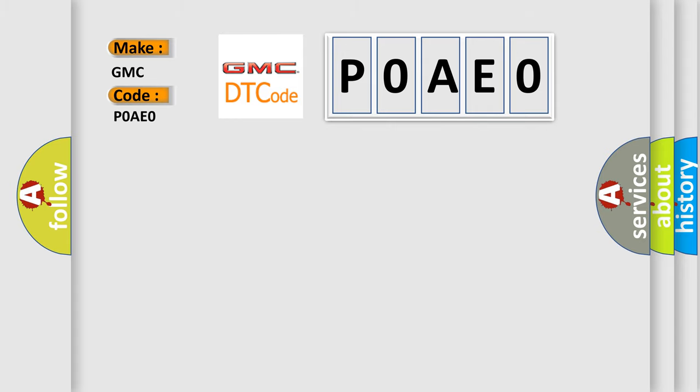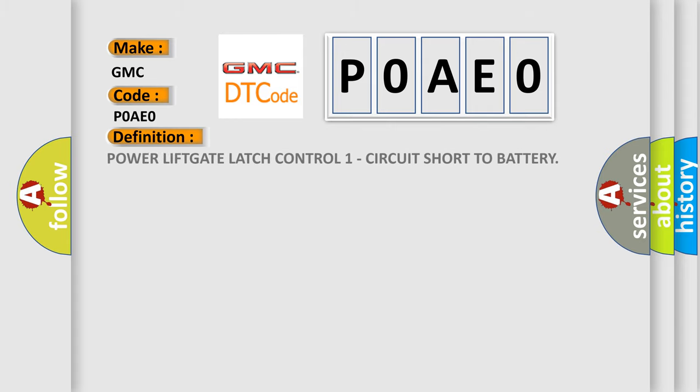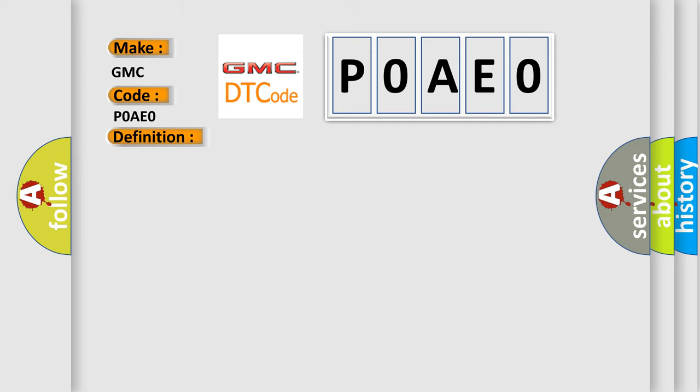The basic definition is: Power Liftgate Latch Control 1 Circuit Short to Battery. Any time the power liftgate is in a latch cinch or release operation, when the liftgate latch motor cinch or release output is pulled high prior to or during a latch cinch or release operation, this code will set.